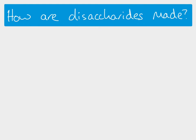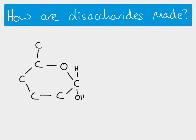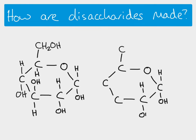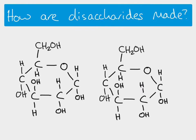Let's take two monosaccharides and see how they join together. We'll start with our alpha glucose — remember you need to be able to draw this from memory. Here's our alpha glucose molecule with all of the atoms and bonds drawn in. If we react two alpha glucose molecules together, we would make the disaccharide maltose.